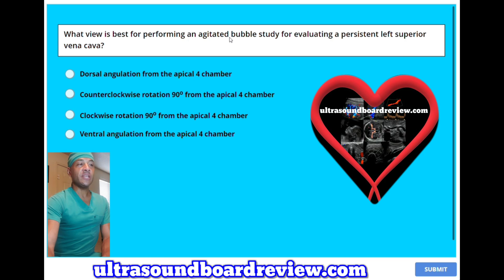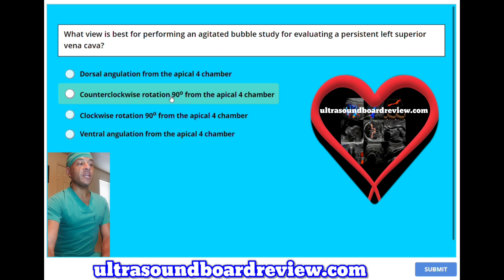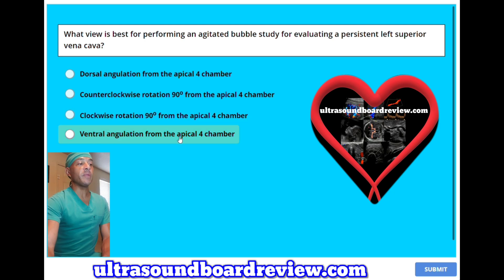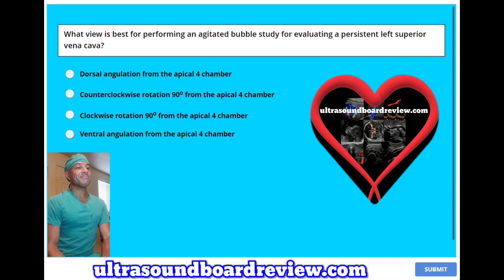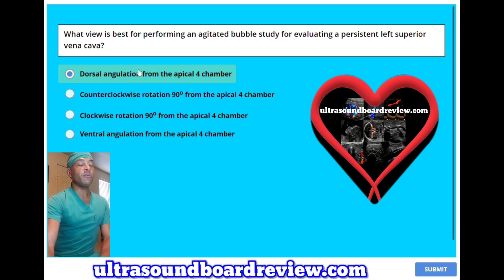Which view is best for performing an agitated bubble study for evaluating a persistent left superior vena cava? A, dorsal angulation from the apical four-chamber; B, counterclockwise rotation 90 degrees from the apical four-chamber; C, clockwise rotation 90 degrees from the apical four-chamber; or D, ventral angulation from the apical four-chamber? The answer is A, dorsal angulation from the apical four-chamber, meaning you angle posteriorly.